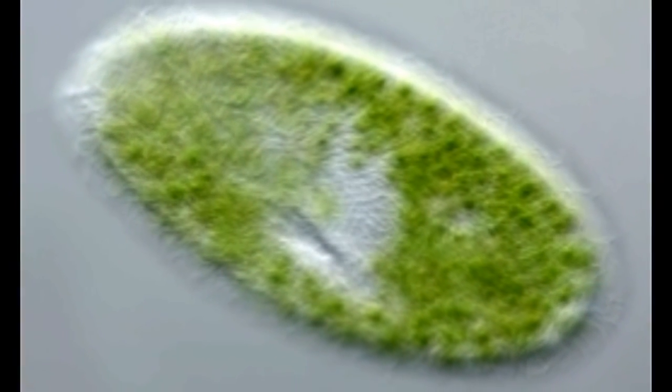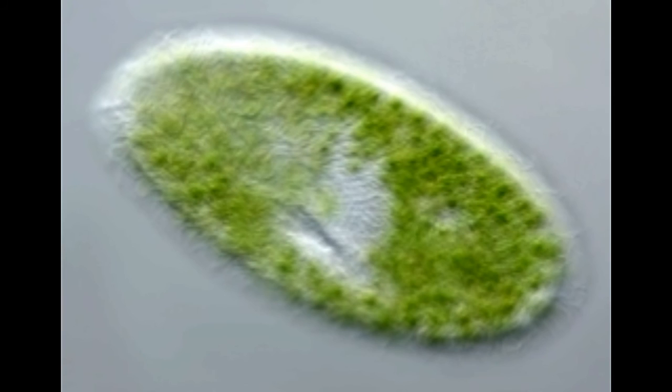The cilia play a key role in paramecium movement. Underneath the cell membrane, there exists a thin and clear layer of ectoplasm, which encloses the cytoplasm.